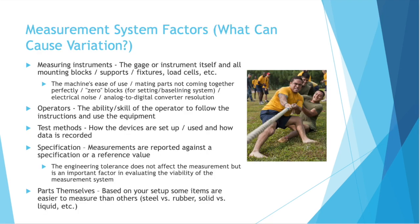So if gauge R&R allows us to determine our variation in the measurement system, what causes this variation in the first place? It can be a few things. The measuring instruments themselves, and any mounting blocks, supports, fixtures, load cells, etc.